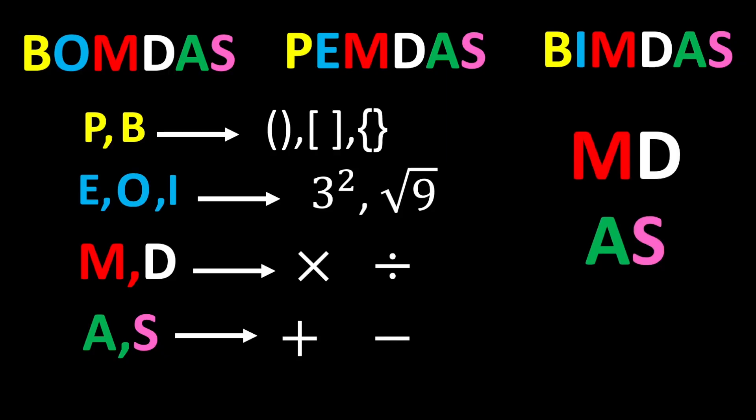Multiplication and division have equal priority, so whenever both appear in an expression, move from left to right and perform whichever you reach first. This rule also applies to addition and subtraction.